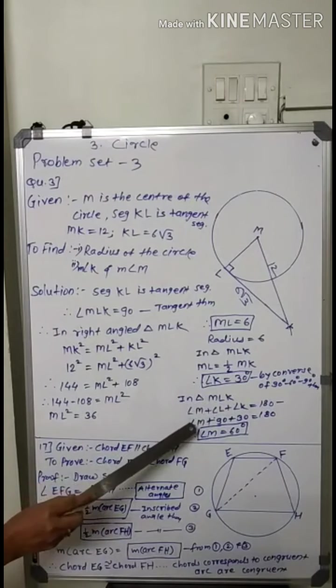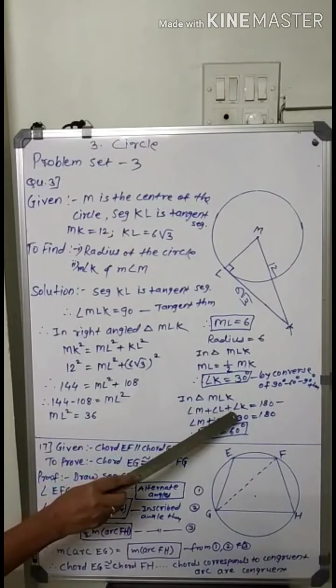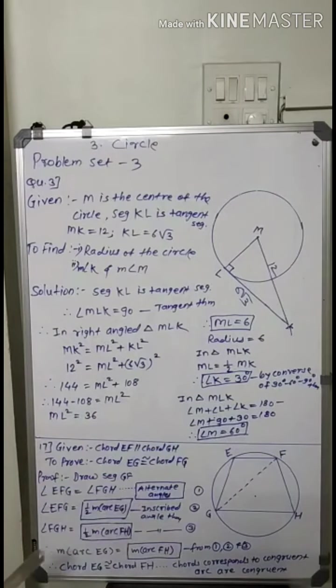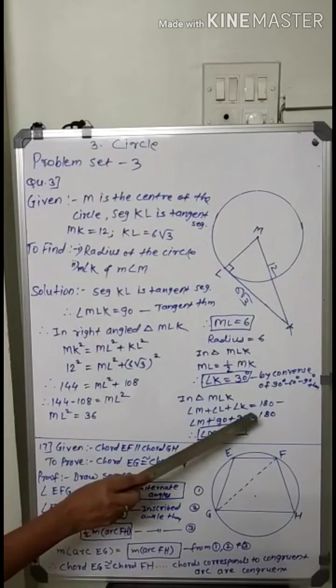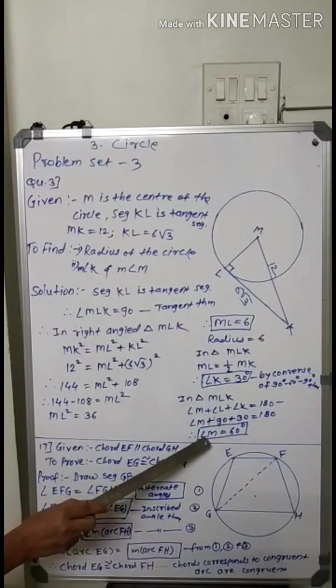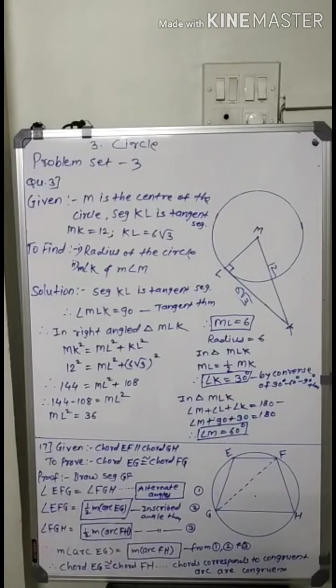In triangle mlk, angle sum property of triangle: angle m plus angle l plus angle k equal to 180. So angle m plus 90 plus 30 equal to 180. Angle m equal to 180 minus 120 equal to 60 degrees. So this example will be asked in exam for 3 marks. Very easy.